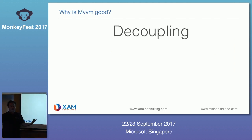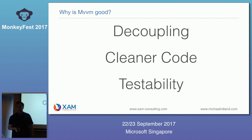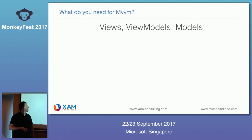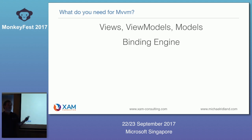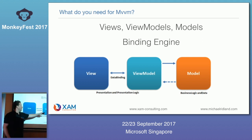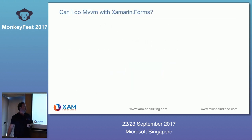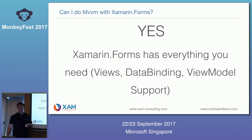MVVM is good because it decouples the view from the view model, and you can easily unit test against it. It makes the code cleaner and improves testability. For MVVM you need views, view models, and a binding engine to bind view models to your views. Xamarin Forms has most of the stuff you need for MVVM built in — data binding and view models.